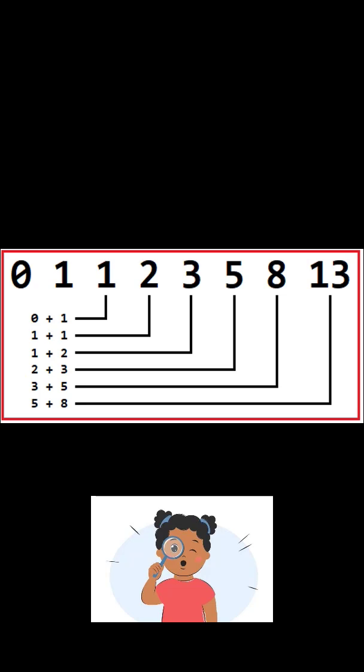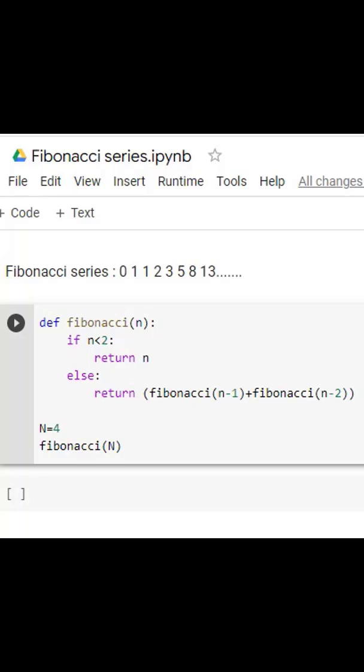Usually it starts from 0 or 1. Now we can see the Fibonacci series here. First element is 0, second is 1. So 0 plus 1 is 1, 1 plus 1 is 2, and so on. So let's write a code for it.